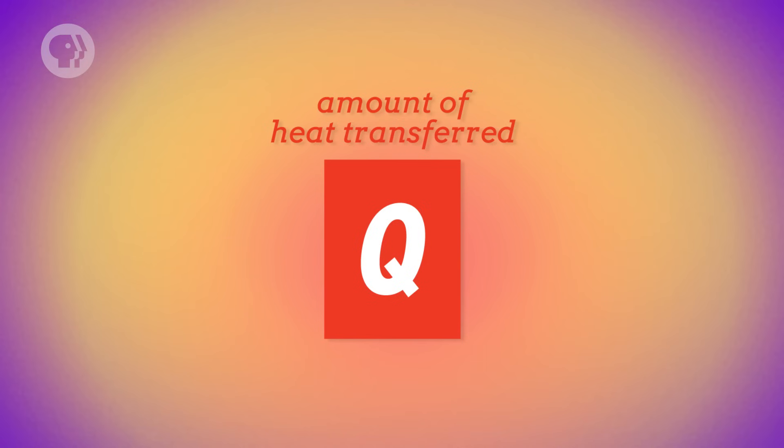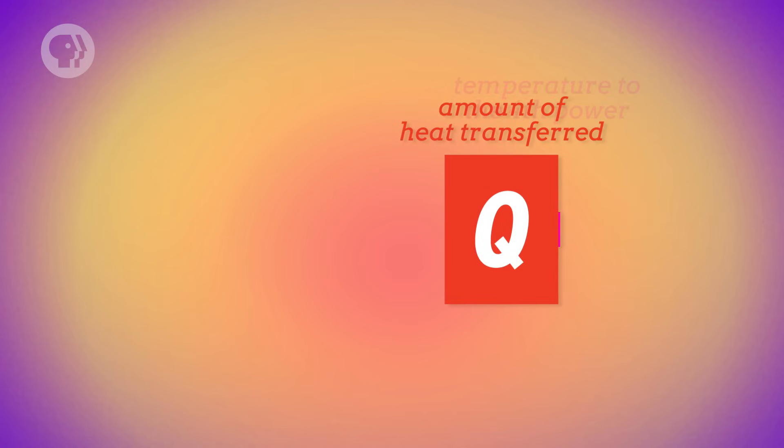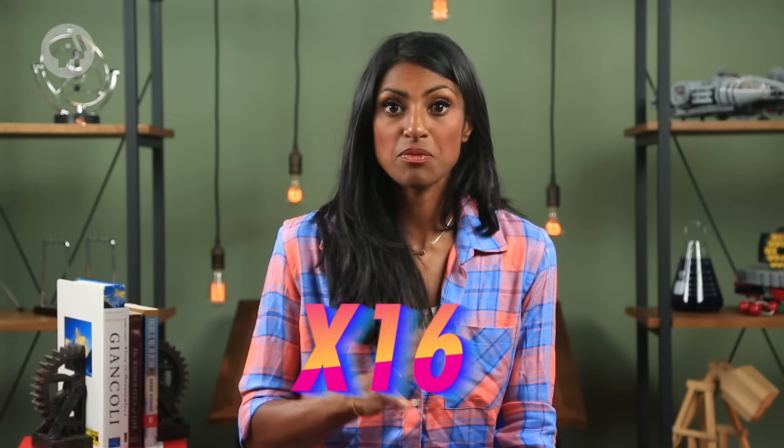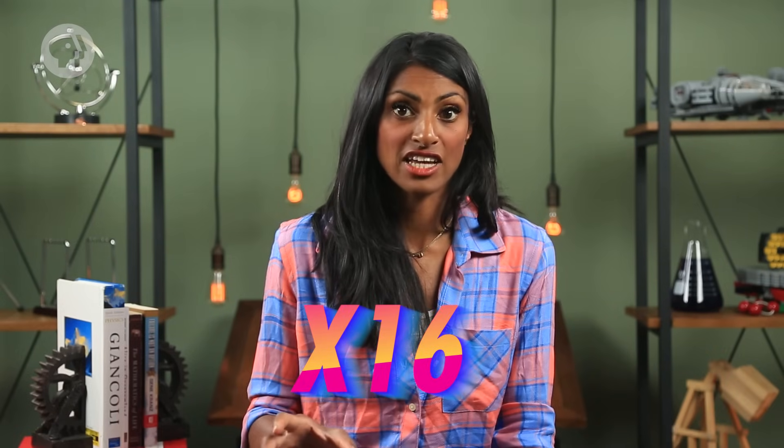The bigger the object's area, the faster it will radiate heat. And the same is true for temperature. Specifically, the amount of heat that an object radiates over time is proportional to its temperature raised to the fourth power. Meaning, if you double an object's temperature, you multiply the heat it radiates over time by 16.